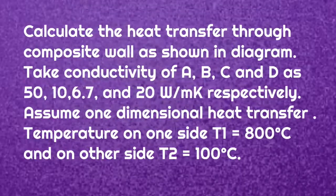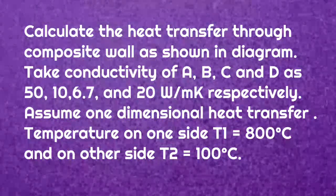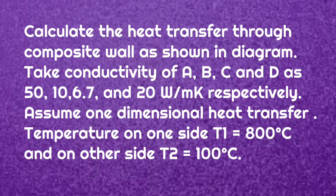We will read the given question. Calculate the heat transfer through the composite wall as shown in the diagram. Take conductivity of A, B, C, D as 50, 10, 6.7, and 20 Watt per meter Kelvin respectively. Assume one-dimensional heat transfer. Temperature on one side T1 is equal to 800 degree Celsius and temperature on the other side T2 is equal to 100 degree Celsius.